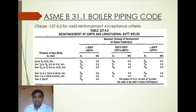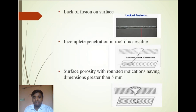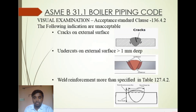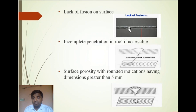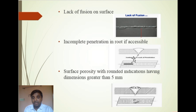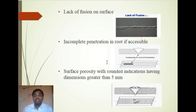This covers the acceptance criteria for girth and longitudinal welds as per table 127.4.2. Next, lack of fusion on surface — if in visual examination the parent metal is not fully melted after welding, this is called lack of fusion on surface, and it is not acceptable. Incomplete penetration at the root, if accessible for visual examination, is also not acceptable.